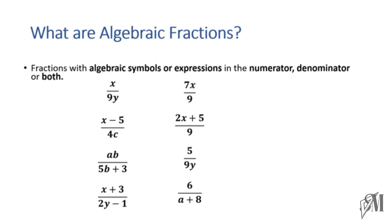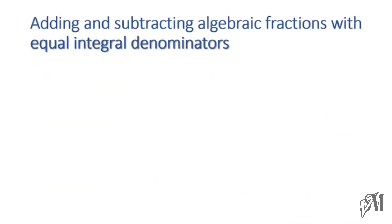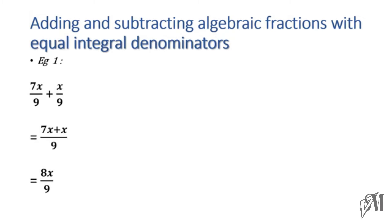Through this video I am going to tell you how to simplify algebraic fractions. The first part we are going to see is adding and subtracting algebraic fractions with equal integral denominators — where the denominators are numbers. For example, 7x over 9 and x over 9: the denominator in both fractions is 9, so we simply add the numerators. 7x plus x over 9 gives us 8x over 9.